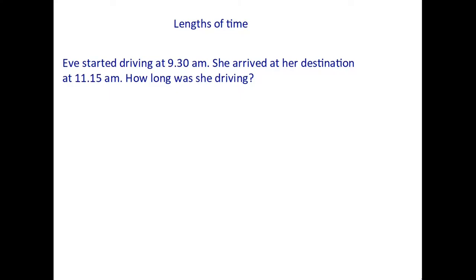To answer a question like this we have to do it by breaking it down into parts, and the best way is to start with the time that Eve started driving, that was 9:30. The best thing to do is to work out the length of time up to the next hour. Now if it's 9:30 the next hour is in 30 minutes time, so we have 30 minutes here.